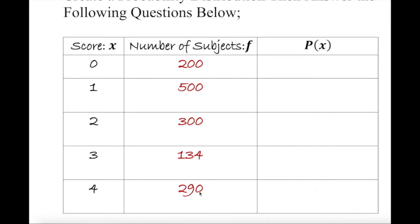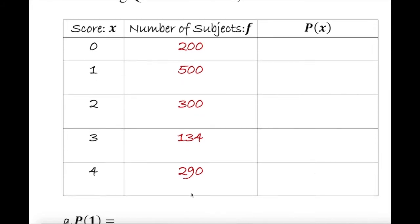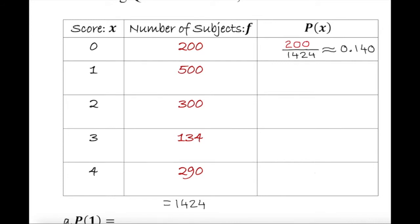So the probability distribution table has values 0 through 4, and these are the frequencies. How can we find the probability of X? It's basically the frequency divided by the total. So 200 over the total — if we use any calculator, that gives us approximately 0.140. So 200 divided by 1424 equals 0.140.